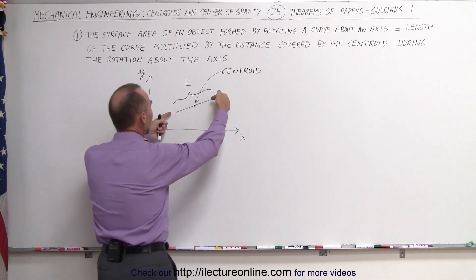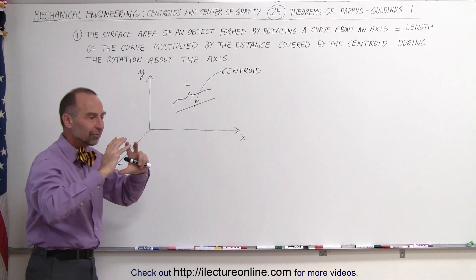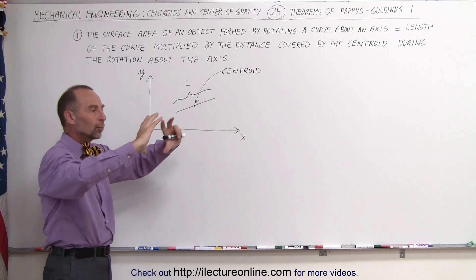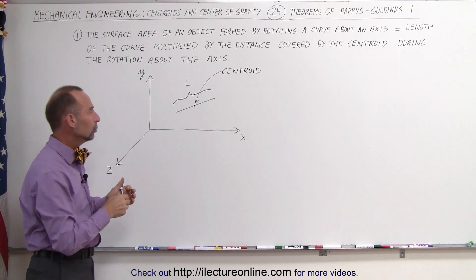If we now take that line and rotate it about the x-axis we will form kind of a cone that goes outward in one direction and inward towards the other direction. It's a truncated cone. It's a hollow cone.